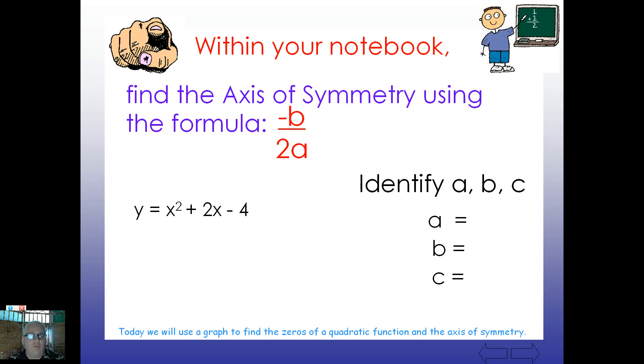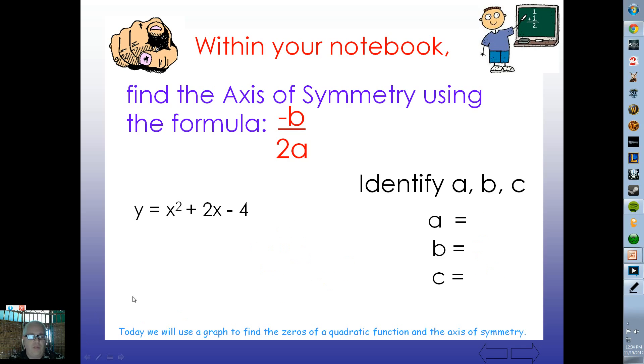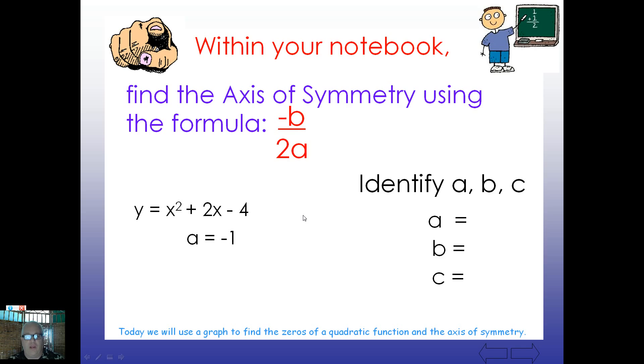Let's try another one here. Y equals x squared plus 2x minus 4. Pretty simple looking equation there. Be careful with this. How about 1 for a, 2 for b, and negative 4 for c. So negative the opposite of b over 2 times a. Negative 2 divided by 2. Did you end up with an answer of negative 1? I hope so. Negative 1.